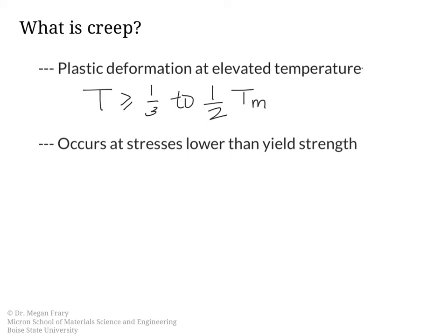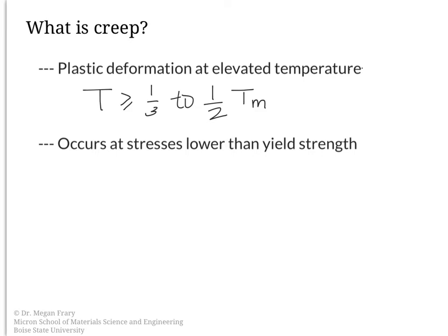In creep we are interested in the interaction between stress and temperature. Depending on what the stress and temperature are, we will see a resulting strain. What we're usually interested in is the strain rate — how the strain is changing in time — and we're also interested in the time to failure: how long can a piece keep deforming in creep before it fails. Let's take a look at how the strain varies with time.